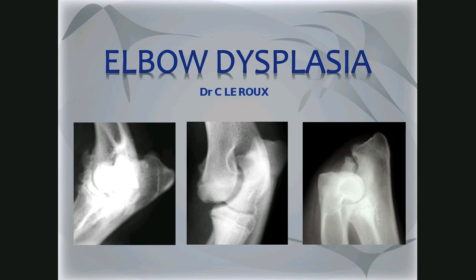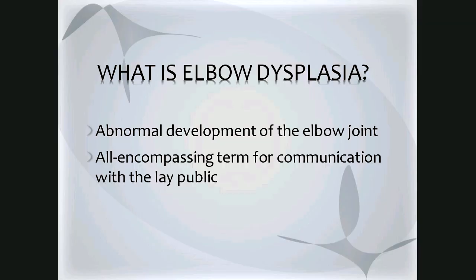Welcome to the DIM 400 musculoskeletal lectures on elbow dysplasia. I am Dr. LaRue and I will be presenting these lectures. The term elbow dysplasia refers to an abnormal development of the elbow joint. It's an all-encompassing term for communication with the lay public, but it doesn't specify the underlying abnormality.